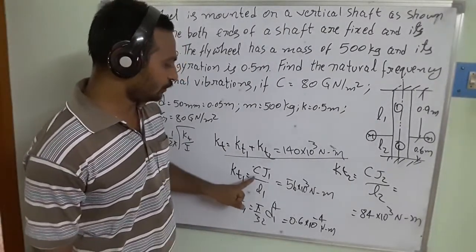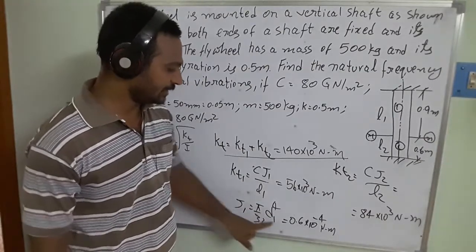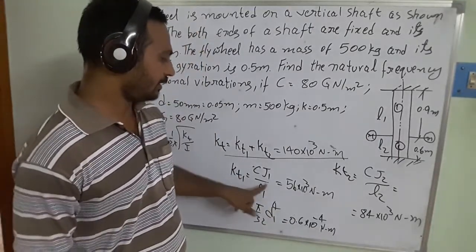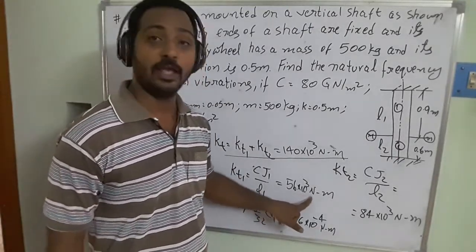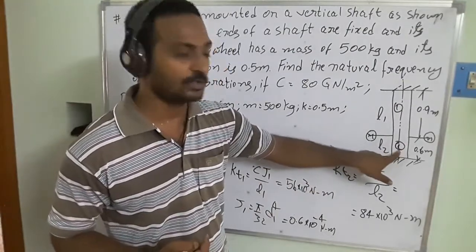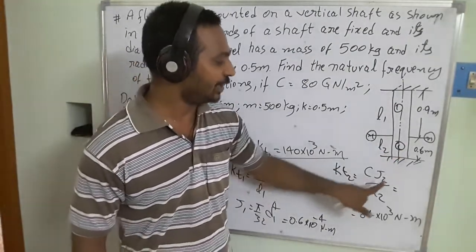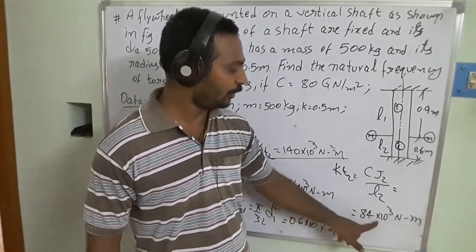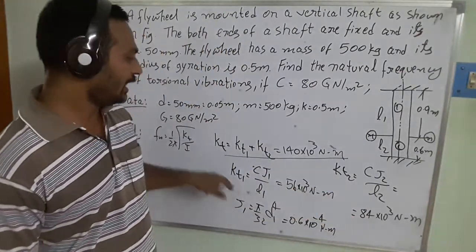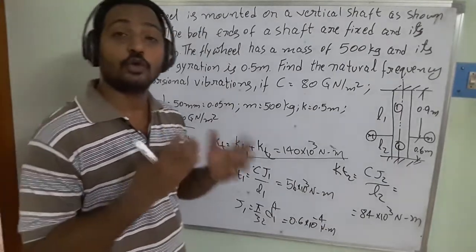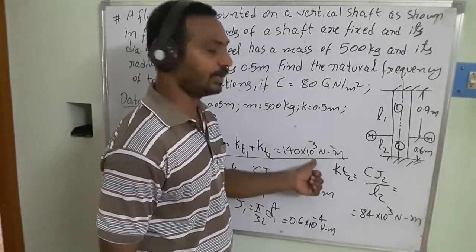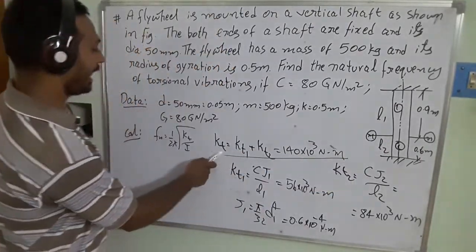Substituting: kt1 = C × J1 / l1, with J1 = 0.6 × 10⁻⁴ m⁴, gives kt1 = 56 × 10³ N·m. Similarly, kt2 = C × J2 / l2 = 84 × 10³ N·m. The total torsional stiffness is kt = kt1 + kt2 = 140 × 10³ N·m.